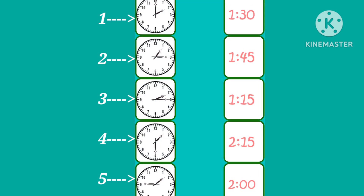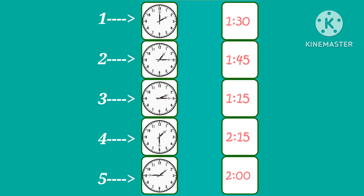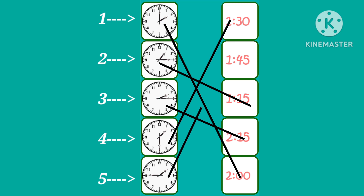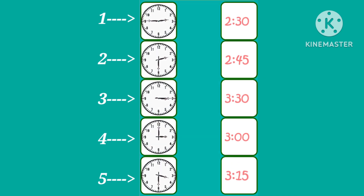Number one is two o'clock. Number two is 1:15. Number three is 2:15. Number four is 1:30. Number five is 1:45. Number one is 2:45.